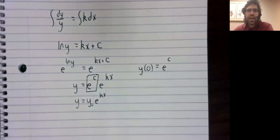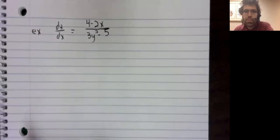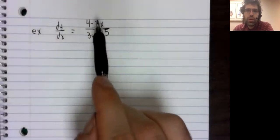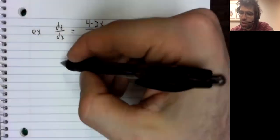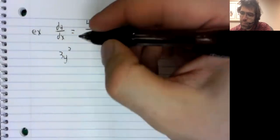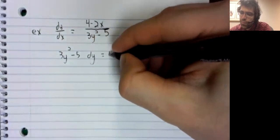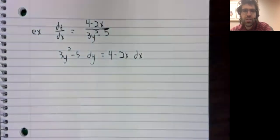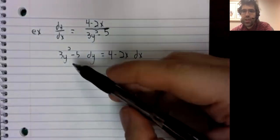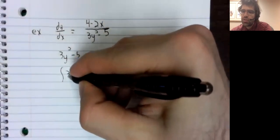Let's do a second example. This might look like a real mess, but this is a separable differential equation. We'll multiply both sides by the denominator, and we'll multiply both sides by dx. Then we will integrate both sides.